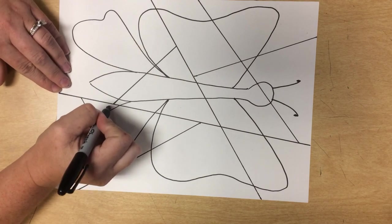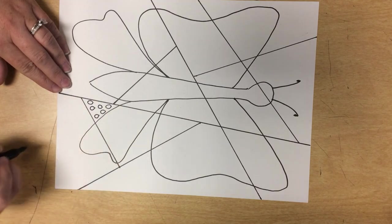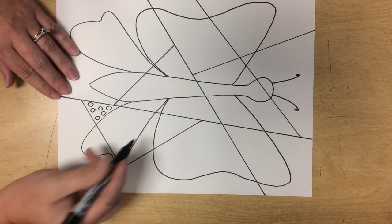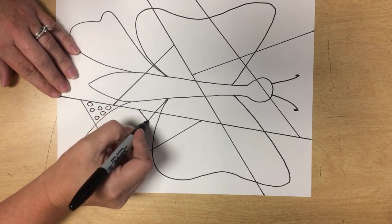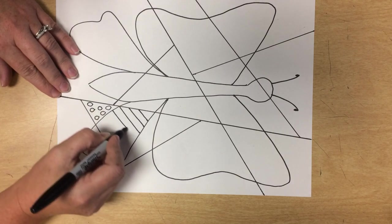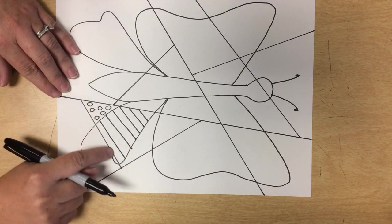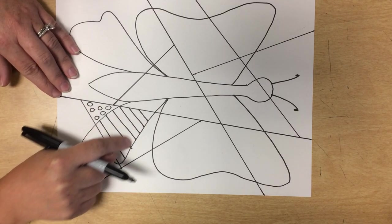So let's say I'm going to do polka dots here. Well, maybe I want to do stripes over here. I'm going to stop because there's a line right here and a line right here.